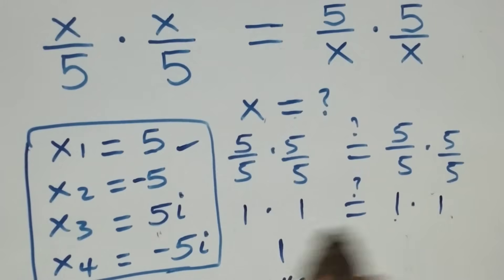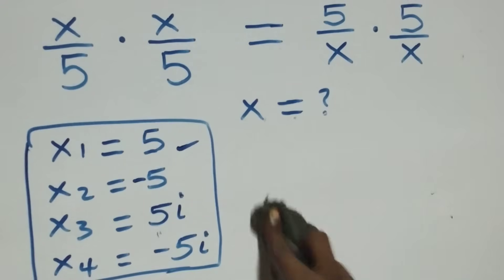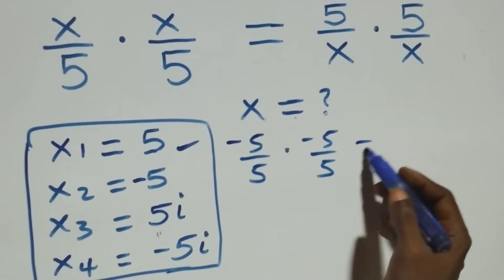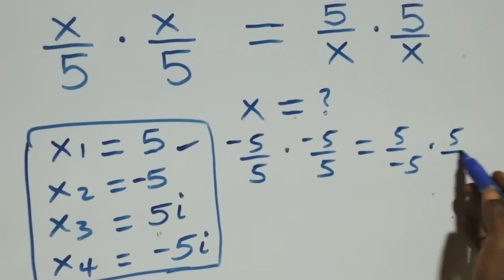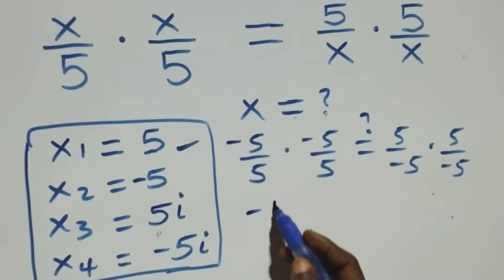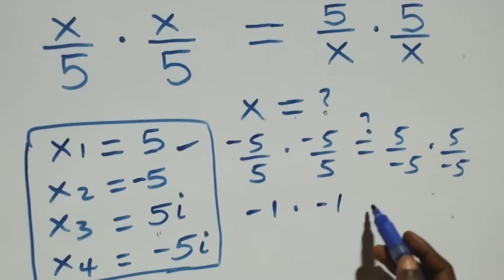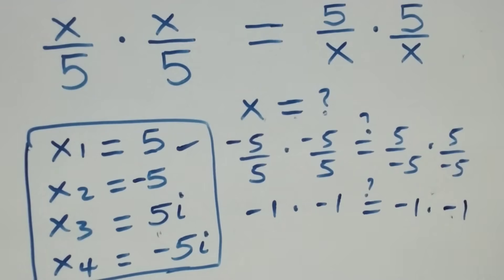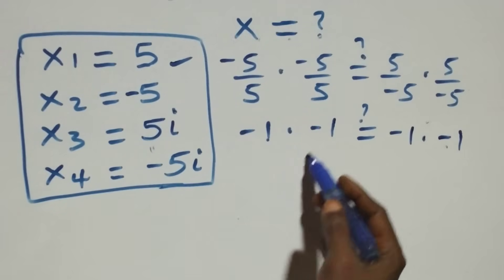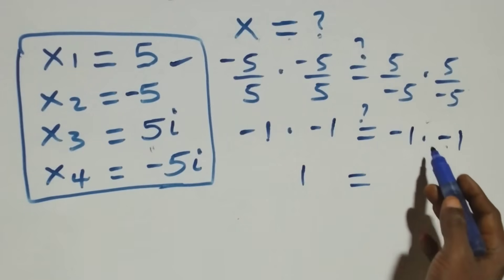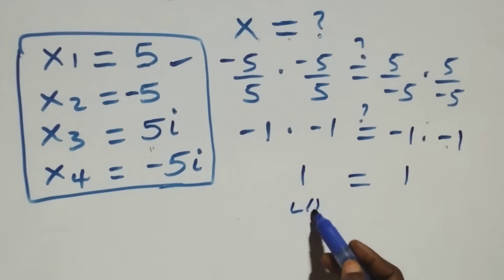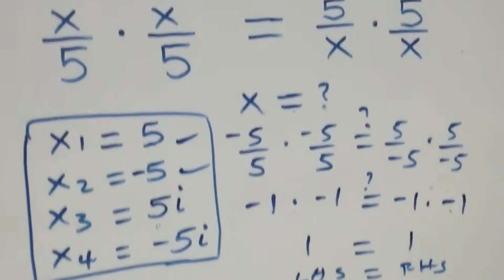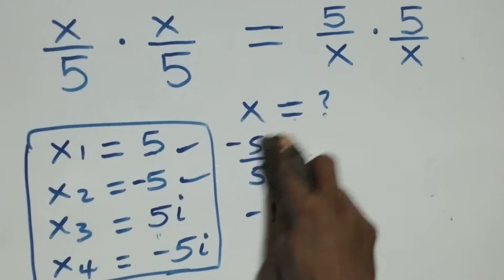Also substituting x equals minus five: minus five over five times minus five over five, is it equals to five over minus five times five over minus five. Minus five over five is minus one, times minus one equals plus one. On the right: five over minus five is minus one, times minus one is plus one. Left hand side equals right hand side, so minus five also satisfies the given problem.